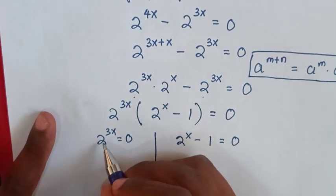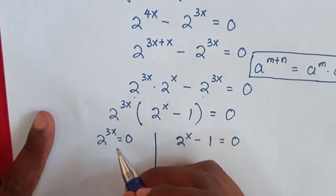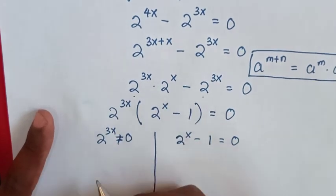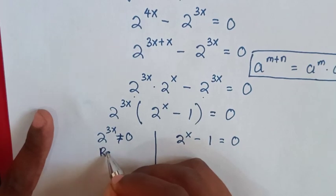Then to solve in here, 2 to the power of any number is not equal to 0, so this is not equal. Then this case is rejected.